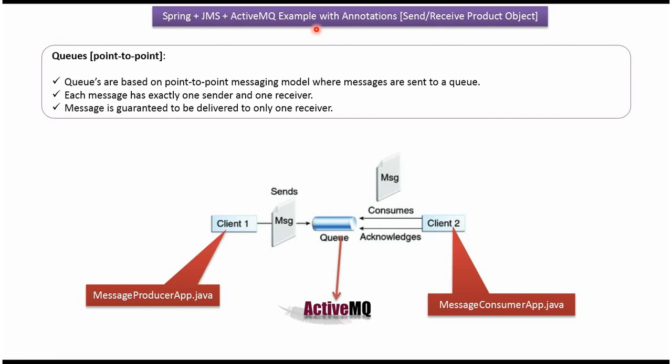This video tutorial will explain a Spring JMS ActiveMQ example with annotation configuration. We will see how to send a product object to a queue and how to receive a product object from the queue. Client1 is the message producer, which creates a message and sends it to the queue. In this example, we will send a product object to the queue.